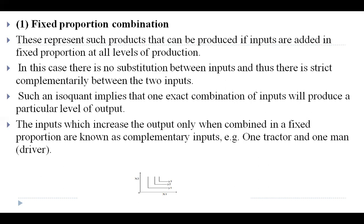When there is a complementary relationship between two inputs, see the shape of the isoquant: x1 on the x-axis, quantities of x2 on the y-axis. The shape of the isoquant here is a right angle — it forms an L-shape.